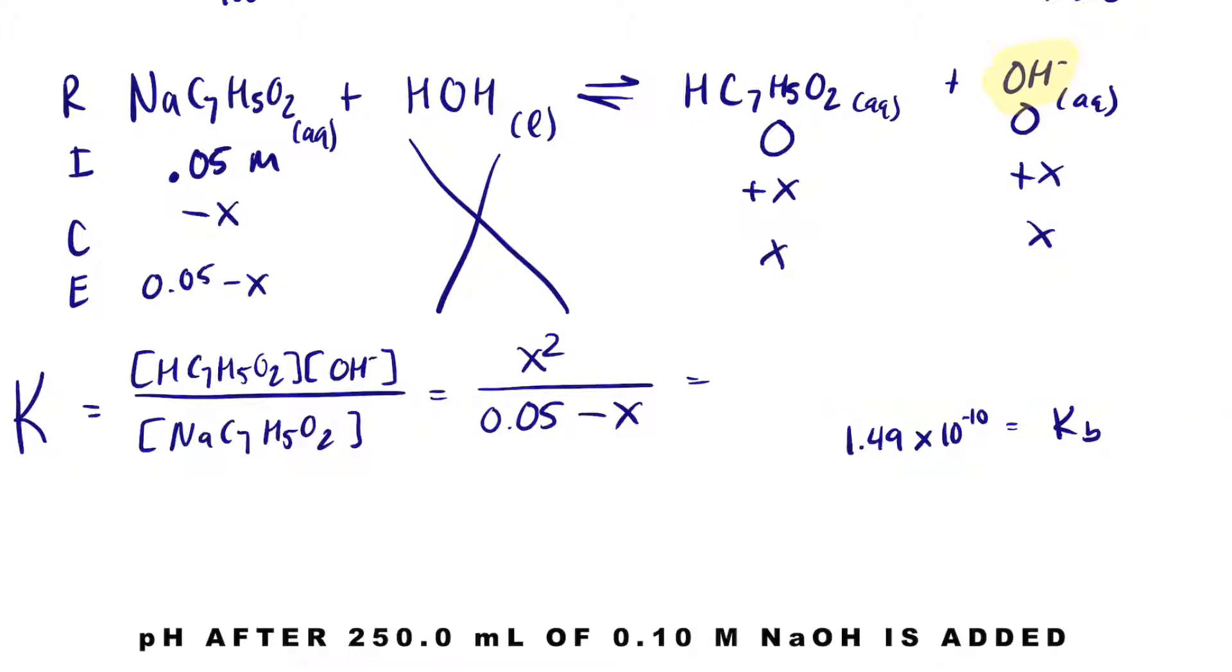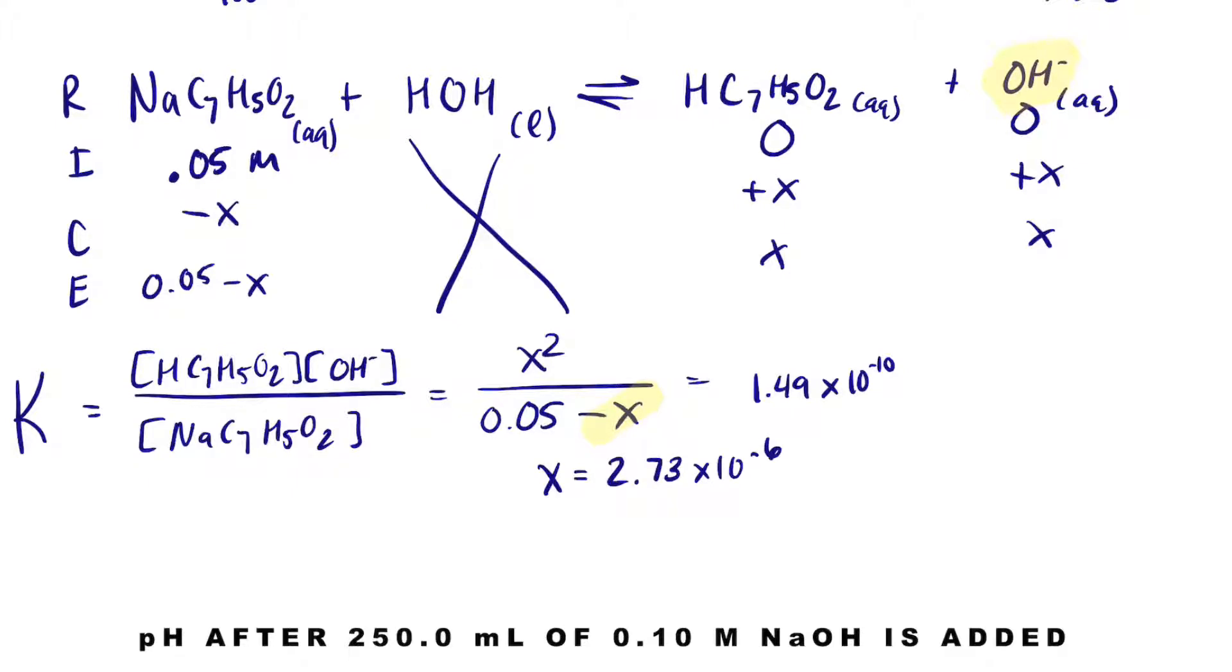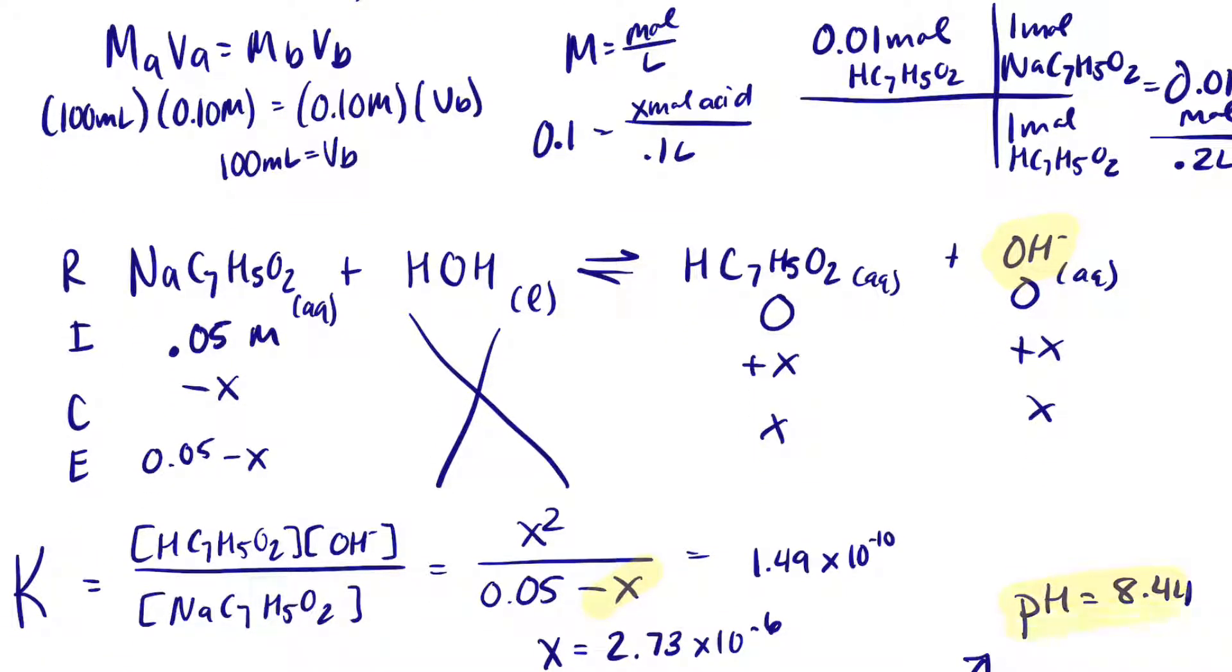So now I can get rid of some of this. I can use the 5% rule to get rid of minus X. And X, when I simplify, is going to be equal to 2.73 times 10 to the minus 6. If I take the negative log of that, because X equals hydroxide, that'll be POH. So the POH equals the negative log of 2.73 times 10 to the minus 6. And that will give me a POH of 5.36. And that is a pH of 8.44, which is what we should expect. We took a weak acid and a strong base, and we titrated it. And at the equivalence point, we should expect a pH greater than 7, and that is what we got.